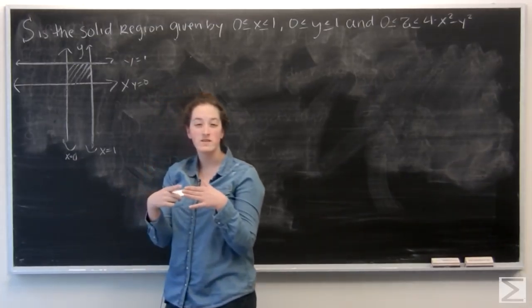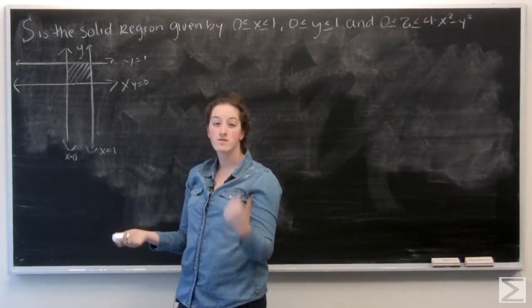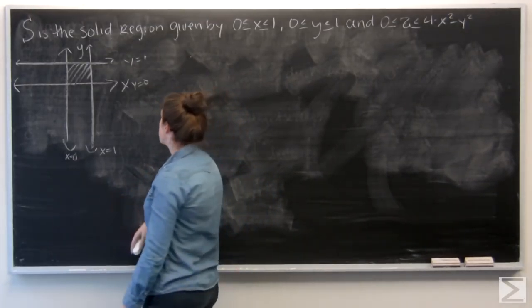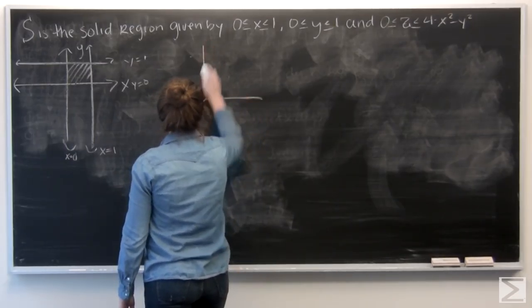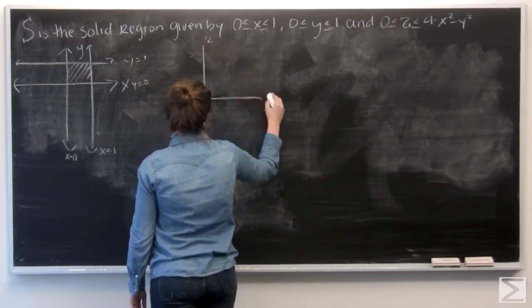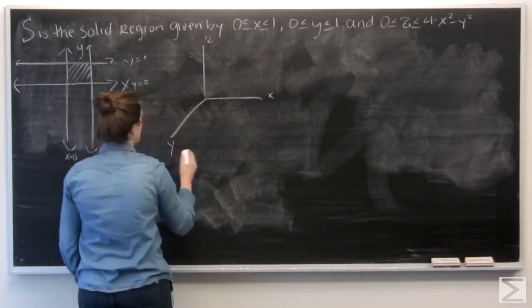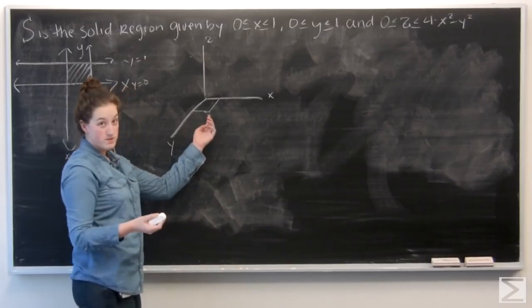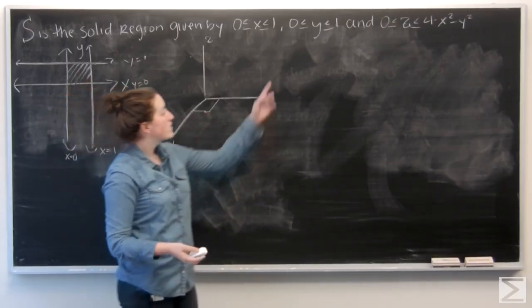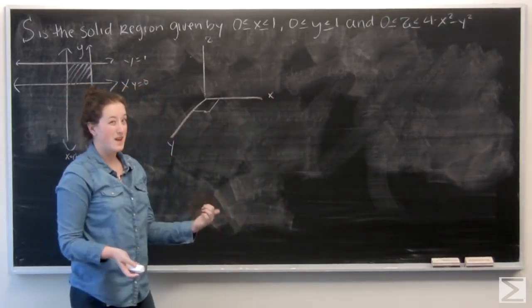So I have this little square in the first quadrant. So now let's translate that into three-dimensional space. So there's my little square. And the lower bound for z is 0, so the x-y plane.